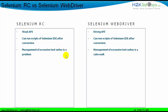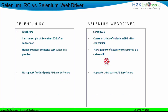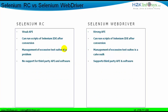The third difference: management of excessive test suites in Selenium RC was a problem, whereas in Selenium WebDriver, managing test suites is a cakewalk — you can have as many test suites as needed and manage them easily. The fourth difference: Selenium RC did not support any third-party API or software, whereas Selenium WebDriver supports third-party APIs such as Apache POI, log4j, and TestNG — which is not possible with Selenium RC.